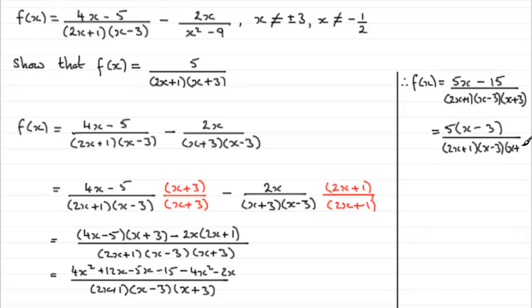And you can see that's the reason why we don't expand the bottom. Because what happens now is we can see that we can cancel out the common factor of x minus 3 with that one in there.